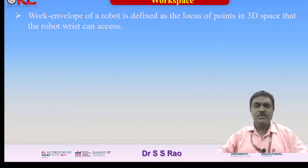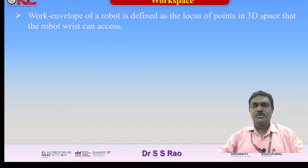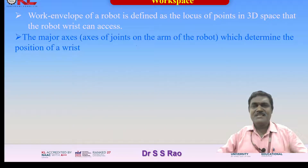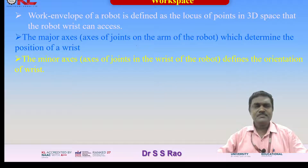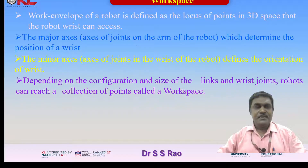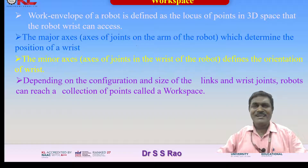Before going to the configurations, we should know what the workspace is. The work envelope of a robot is defined as the locus of points in 3D space that the robot wrist can access. The major axis — joints on the arm — determines the position of the wrist, while the minor axis — joints in the wrist — defines the orientation. Depending on configuration, link size, and wrist joints, robots can reach a collection of points called a workspace.